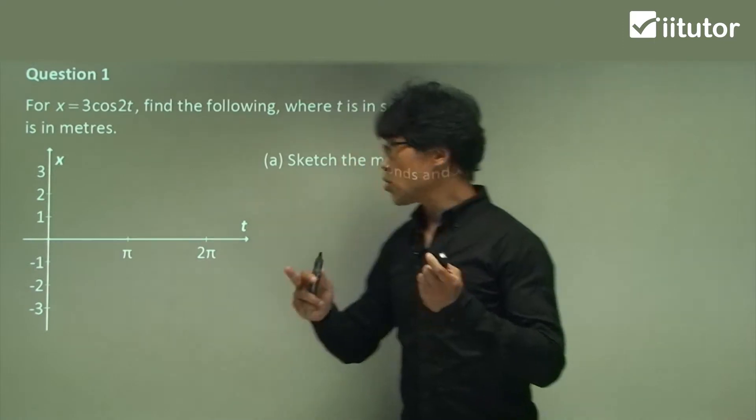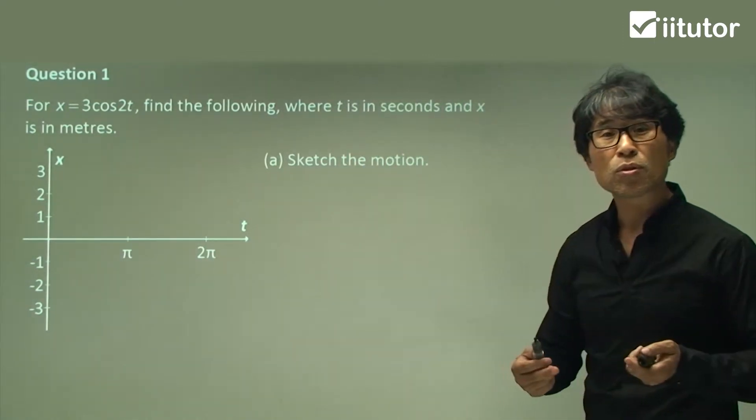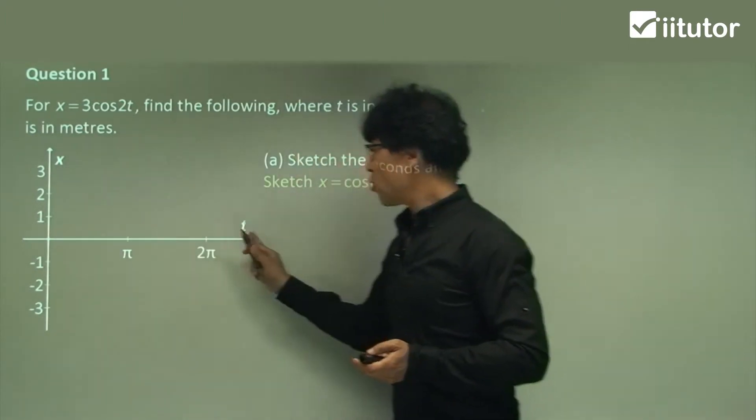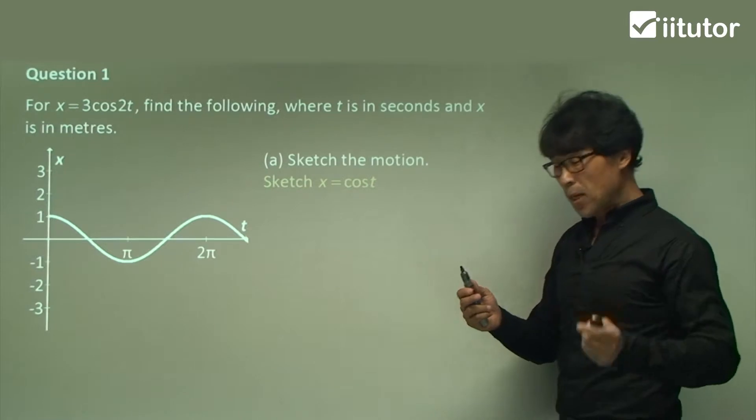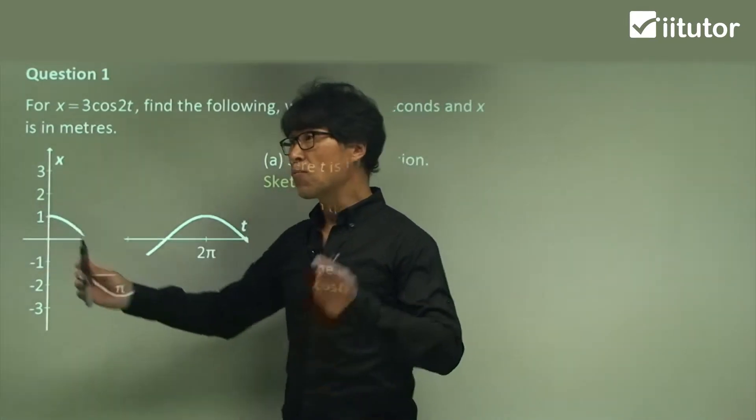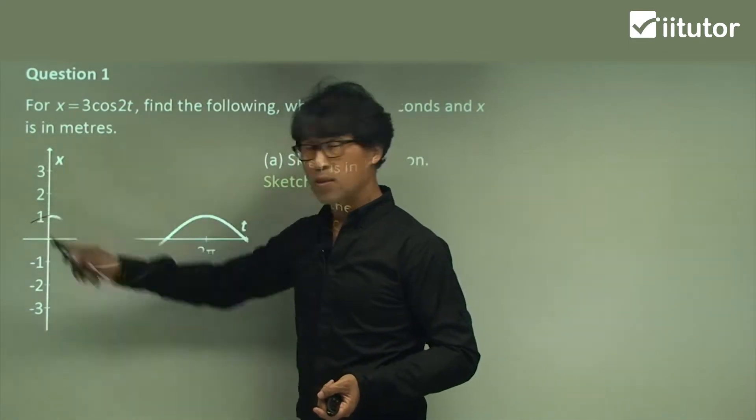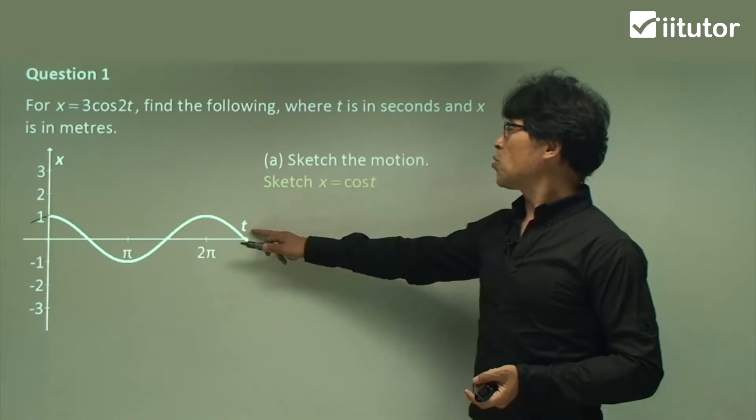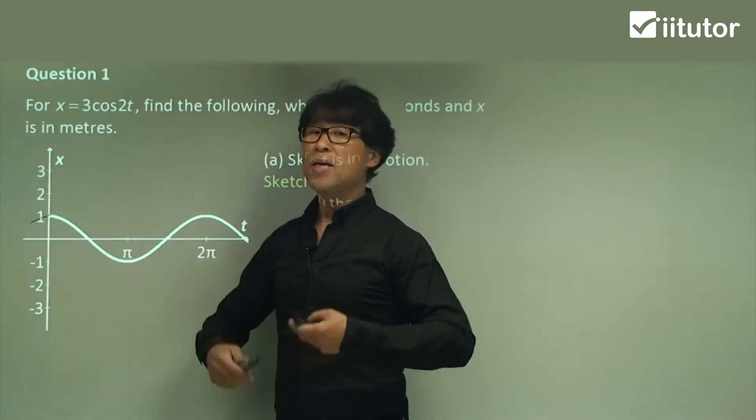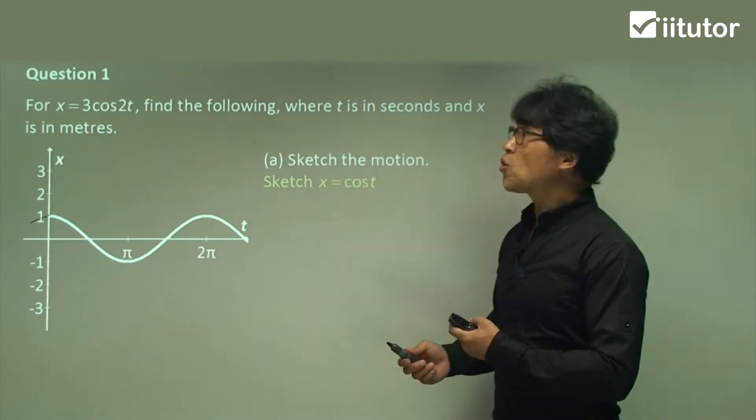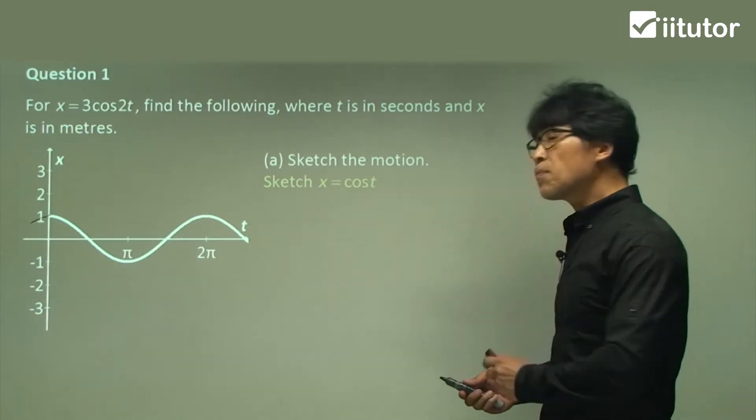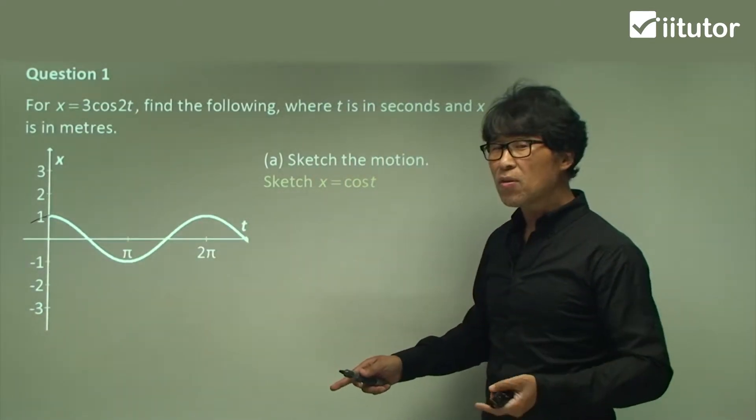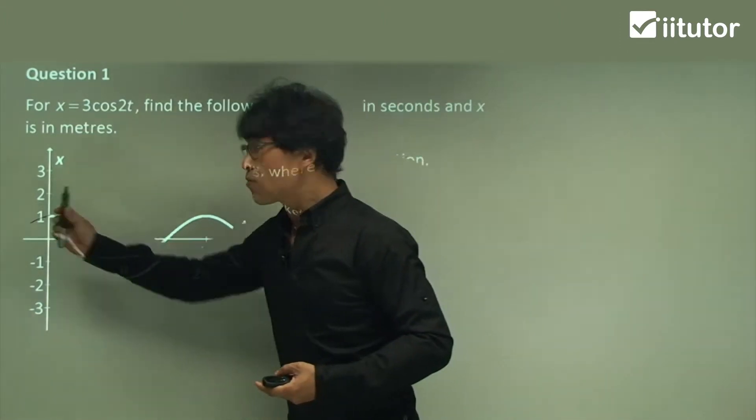First thing is we can sketch the cos t graph. Make sure your sketch should start from zero, from the origin. It can't be like that one. Can anyone tell me why this is not allowed? The negative value of t indicates what happened in the past, but we don't care about what happened in the past. We care about what happened right now and in the future. So negative t values are not allowed. That's why it starts from the very origin.